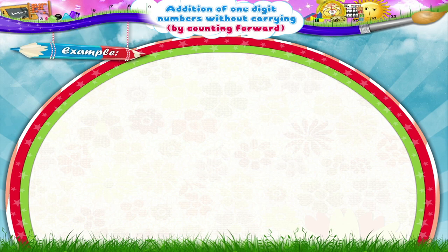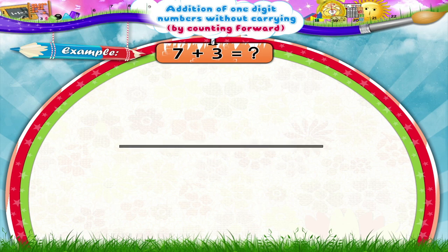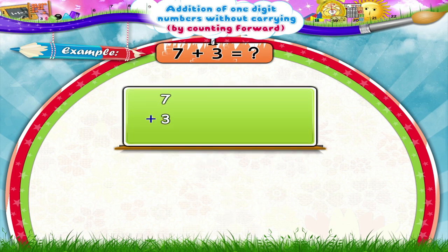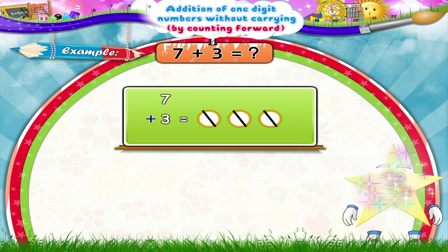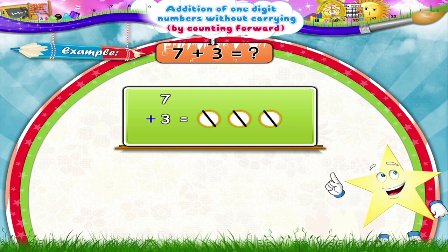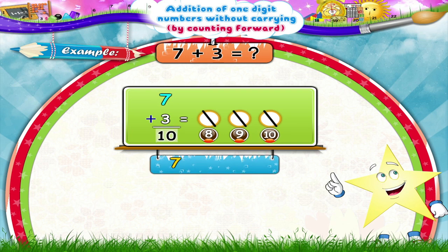Okay! Now tell me, how much is 7 plus 3? We have to add 3 to 7. So we shall count 3 lines after 7. Can you count, Stari? Yes! 8, 9, 10. Thus, 7 plus 3 equals 10.